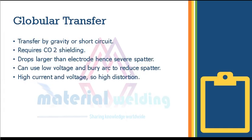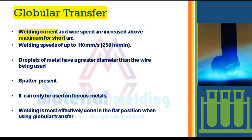The first mode is globular transfer. In globular transfer, transfer happens by gravity or short circuit. It requires CO2 shielding. In this mode, drops are larger than the electrode, hence severe spatter. We can use low voltage and buried arc to reduce spatter. This mode requires high current and voltage, resulting in high distortion. Welding current and wire speed are increased above maximum for short arc, with speeds of up to 110 mm/s (250 in/min) achieved.